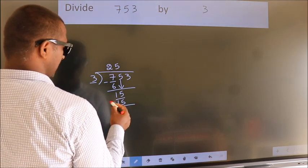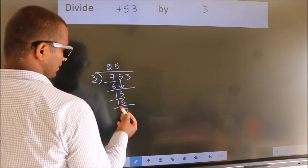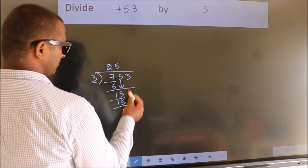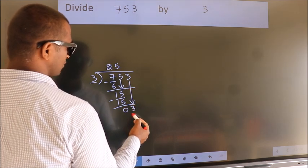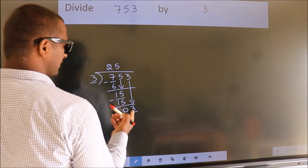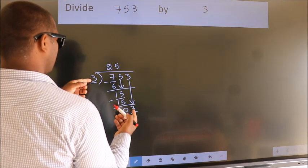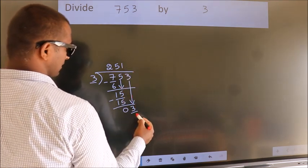Now we subtract. We get 0. After this, bring down the beside number. So 3 down. So 3. When do we get 3 in the 3 table? 3 times 1 equals 3.